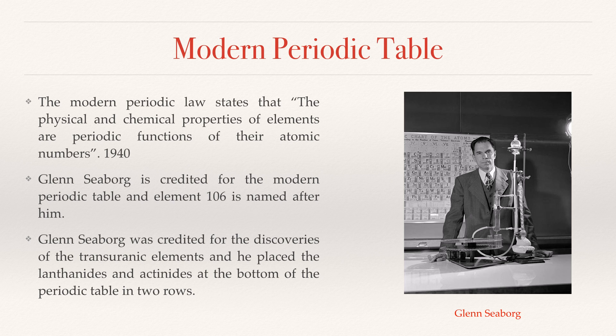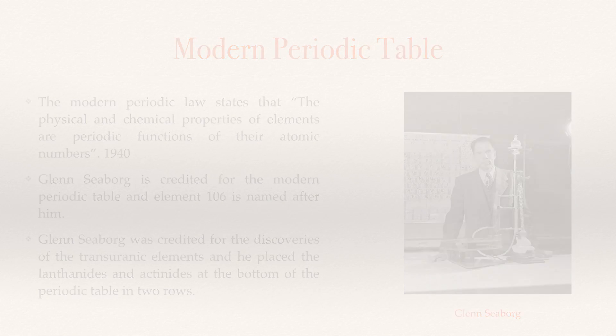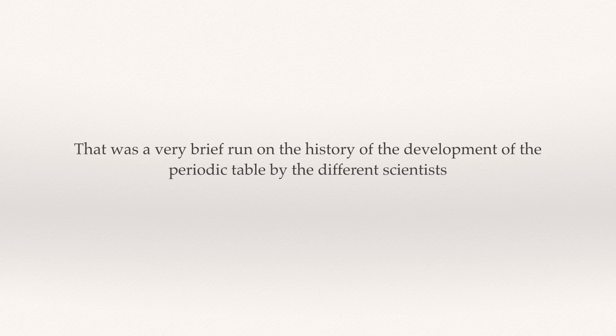Glenn Seaborg is credited for the modern periodic table, and element 106 is named after him. Glenn Seaborg discovered most of the transuranic elements, and he placed the lanthanides and actinides at the bottom of the periodic table in two rows, as we know the periodic table today.